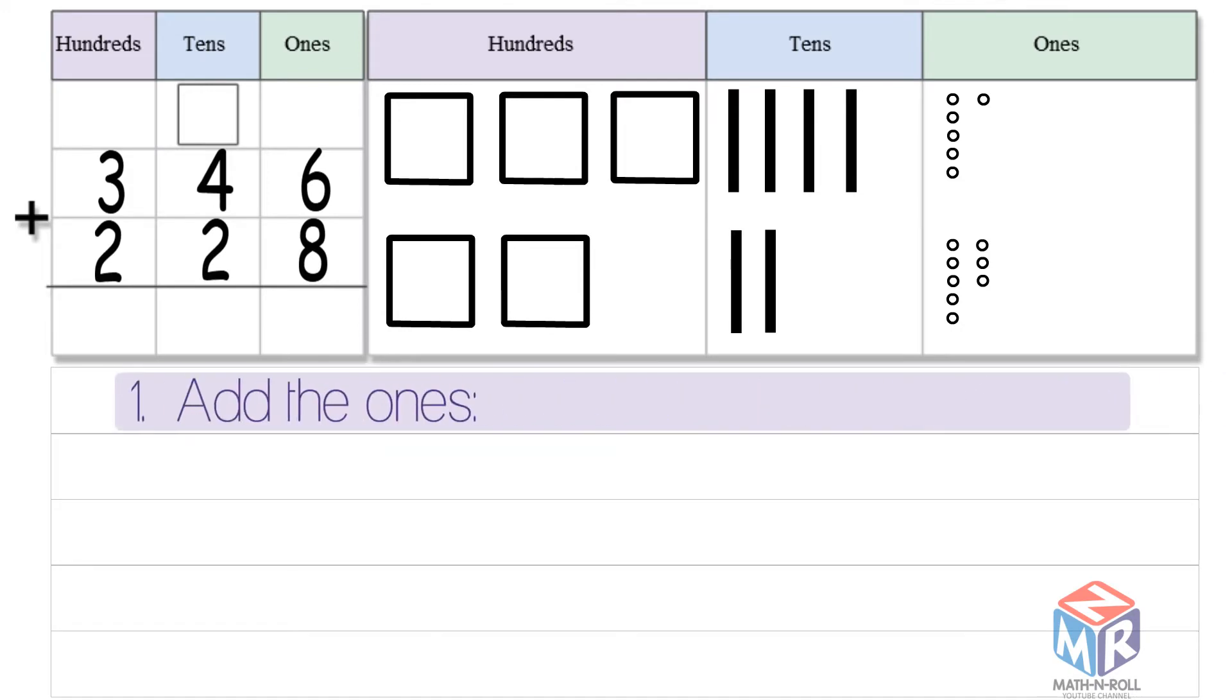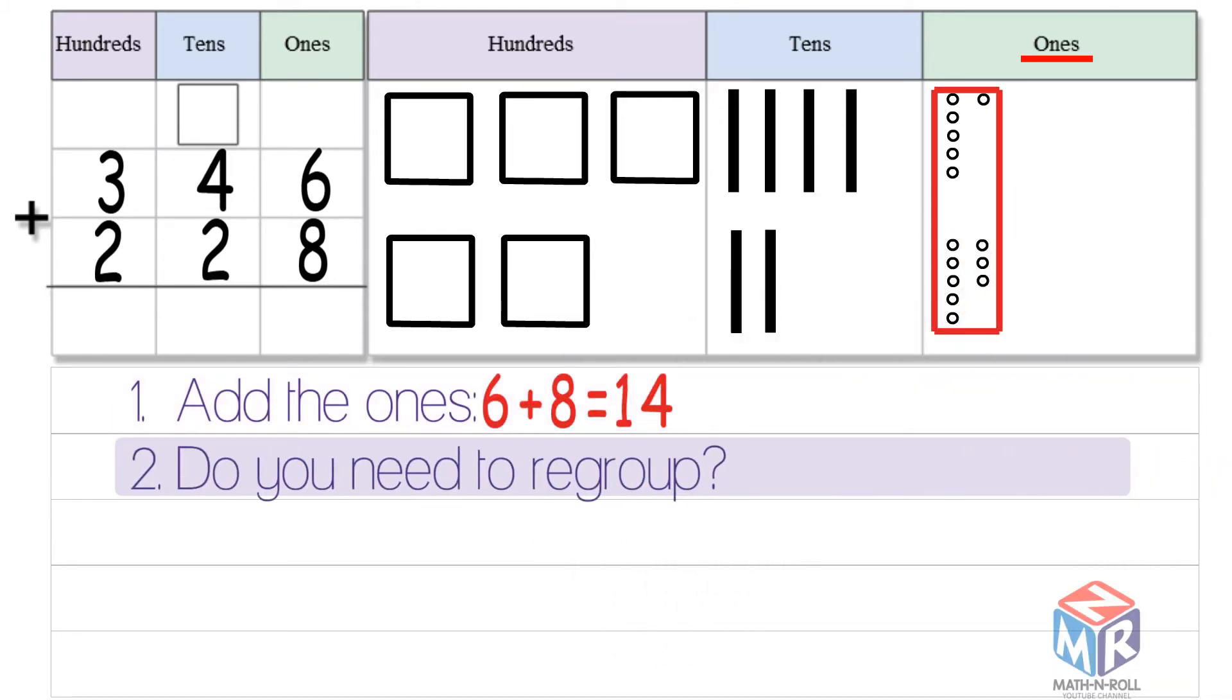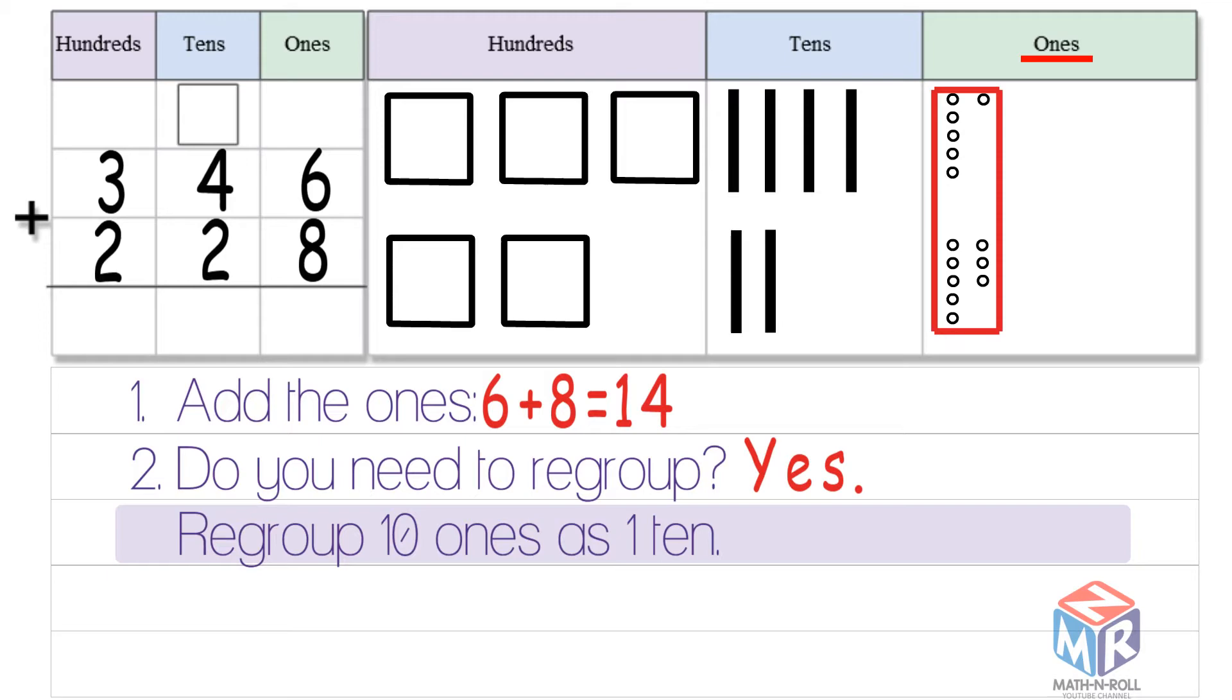First, we add the ones, 6 plus 8 is equal to 14. Do you need to regroup? Yes, because 14 is a two-digit number. So we regroup 10 ones as one ten.